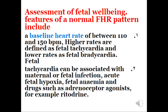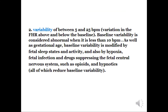Fetal tachycardia can also be associated with acute fetal hypoxia, fetal anemia, and drugs such as adrenoreceptor agonists, for example ritodrine. Feature 2: Variability — between 5 and 25 beats per minute, representing the variation in the fetal heart rate above and below the baseline. Baseline variability is considered abnormal when it is less than 10 beats per minute. Variability is modified by fetal sleep states and activity, and also by hypoxia, fetal infection, and drugs suppressing the fetal central nervous system, such as opioids and hypnotics, all of which reduce baseline variability.